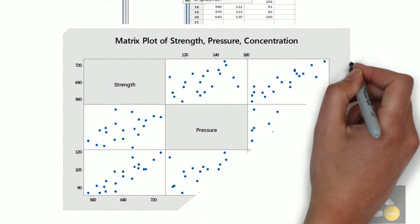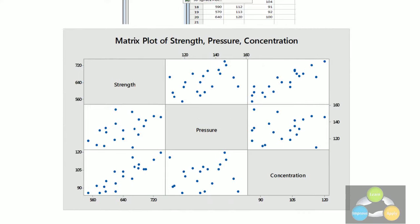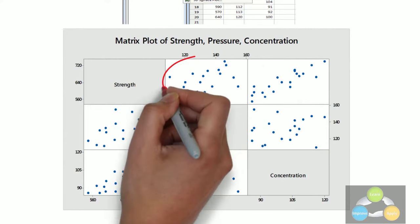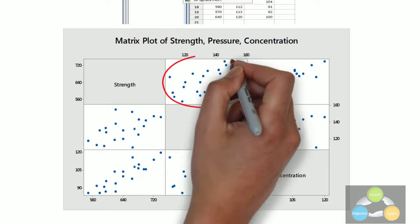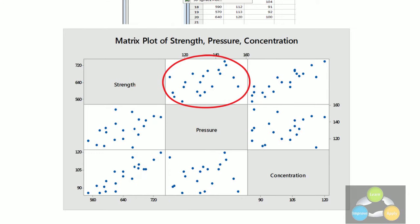This figure shows matrix scatter plot of strength, pressure and concentration. In the first column of matrix scatter plot, we can see relationship among strength vs pressure and strength vs concentration.